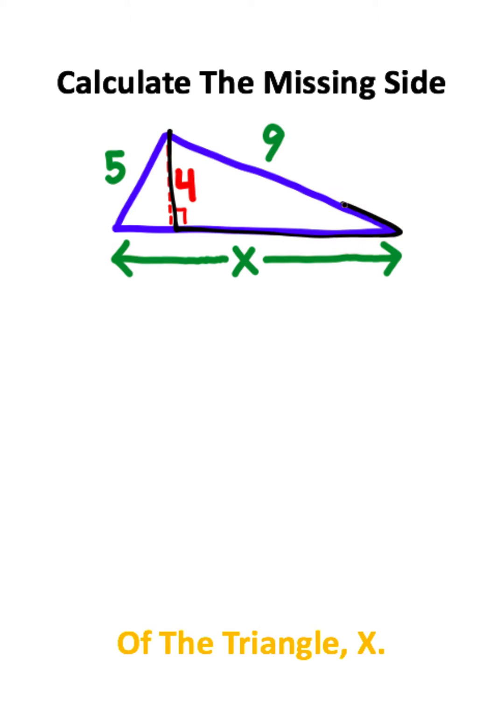Now if you first focus on this right triangle, you can use what's called the Pythagorean Theorem, which says that a squared plus b squared is equal to c squared.